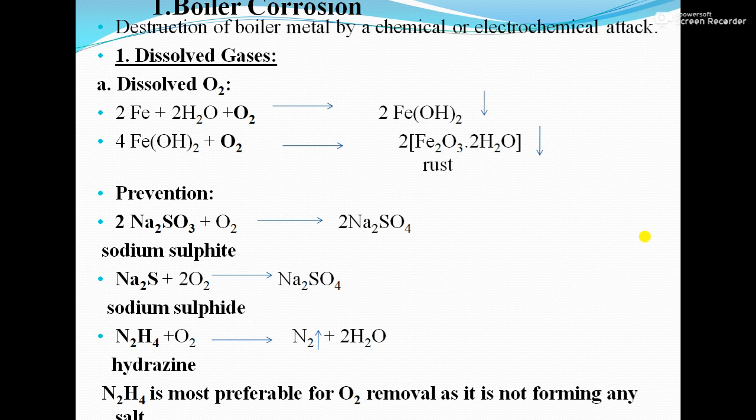Chemical corrosion means the boiler metal reacts with chemicals or gases present in the atmosphere. Electrochemical corrosion involves two types of electrodes — anode and cathode — with an electrolyte present. In electrochemical corrosion, an anodic area forms and gets oxidized (that is the corrosion), while the cathodic area gets reduced, which is called protection.